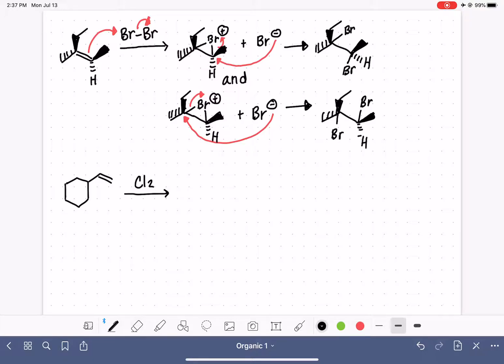When you're doing this, make sure that you're always drawing your wedges and your dashes side by side. You should never be putting a straight line bond in between a wedge and a dash. So your straight line bonds should be side by side, and your wedge and your dash should always be side by side. So these are the two products with correct stereochemistry that are made by this reaction.